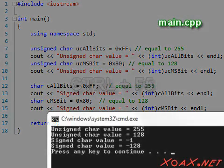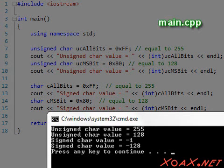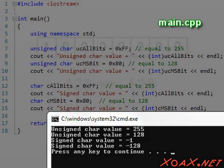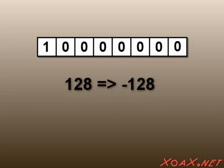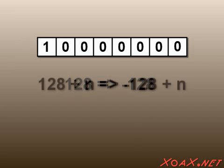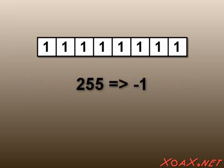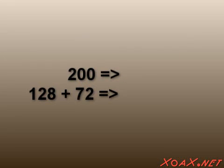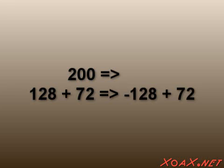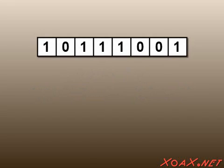We see that the signed values of 255 and 128 are equal to negative 1 and negative 128 respectively. To fully describe two's complement, note that 128 converts to negative 128, and we can convert the rest of the values up to 255 by adding the same amount to each side. Adding 127 shows us that 255 converts to negative 1. Likewise, 200 is 128 plus 72, so it converts to negative 128 plus 72, which equals negative 56.